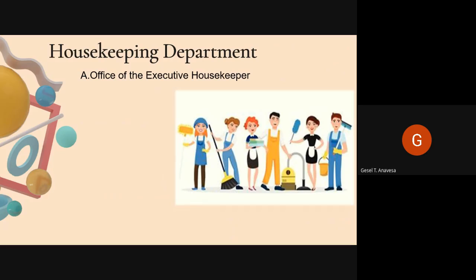The first sub-area is the Office of the Executive Housekeeper, where the administrative work of the department is performed. It must be an independent room to give the housekeeper silence to plan work and hold meetings. The Housekeeping Control Desk operates 24 hours a day. It is where housekeeping staff report for duty and sign out at the end of their shift, and it serves as the main communication center of the department where all information is sent and received.